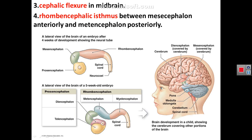The cerebral hemisphere is derived from the telencephalon. At its center is the diencephalon, which forms the thalamus, epithalamus, subthalamus, hypothalamus, and metathalamus. Next is the midbrain, which remains as one vesicle. Then you have pons and cerebellum derived from the metencephalon. Next is the medulla oblongata derived from the myelencephalon, and finally the spinal cord.